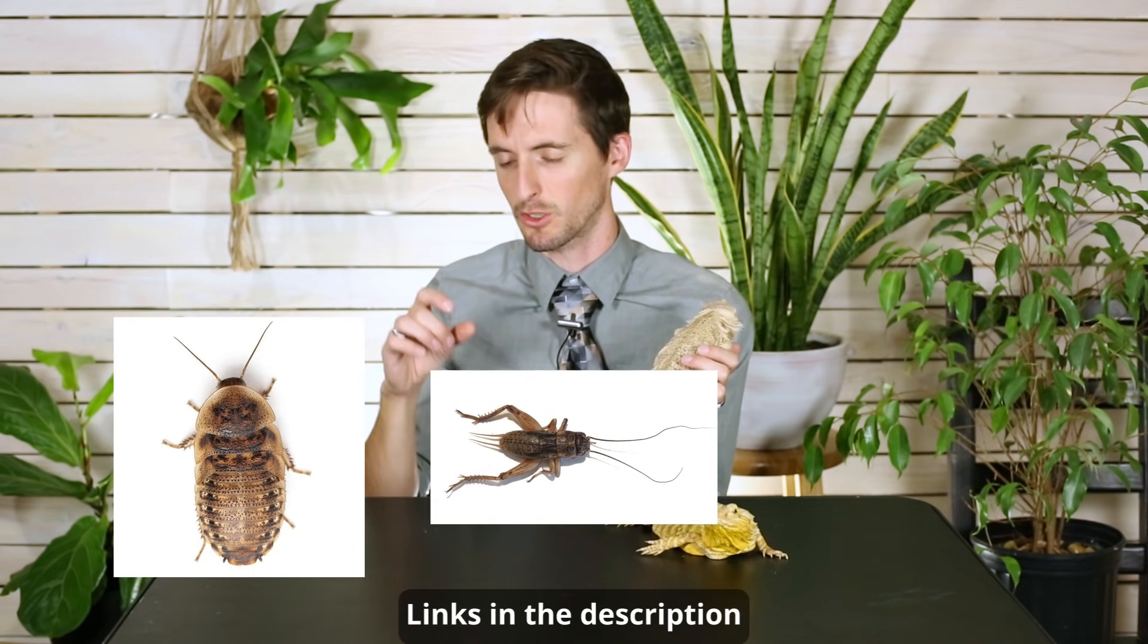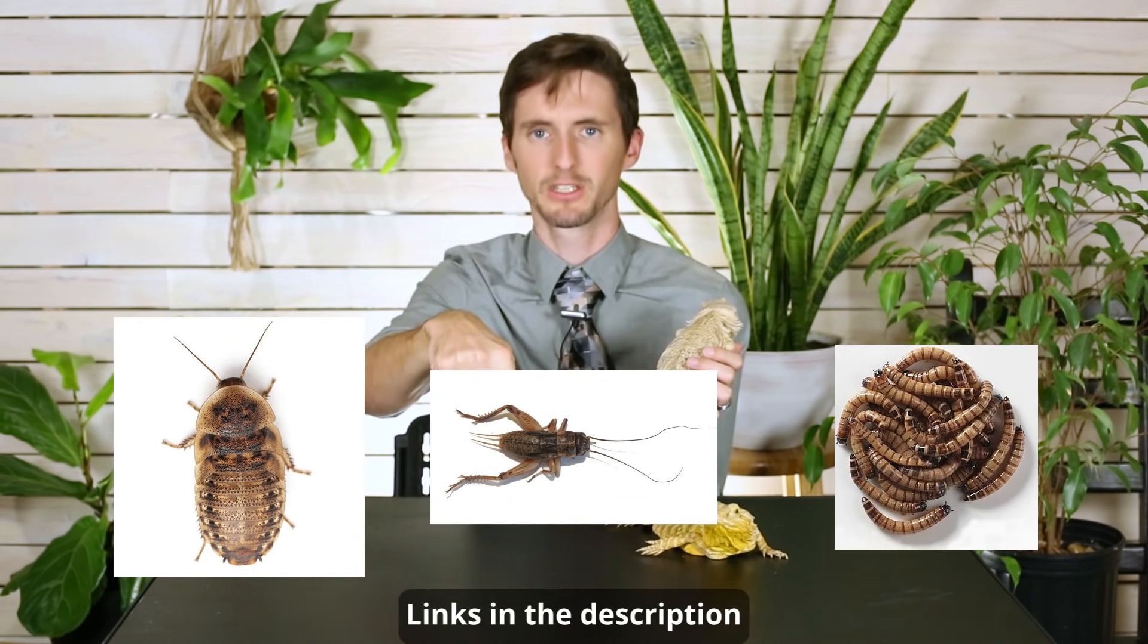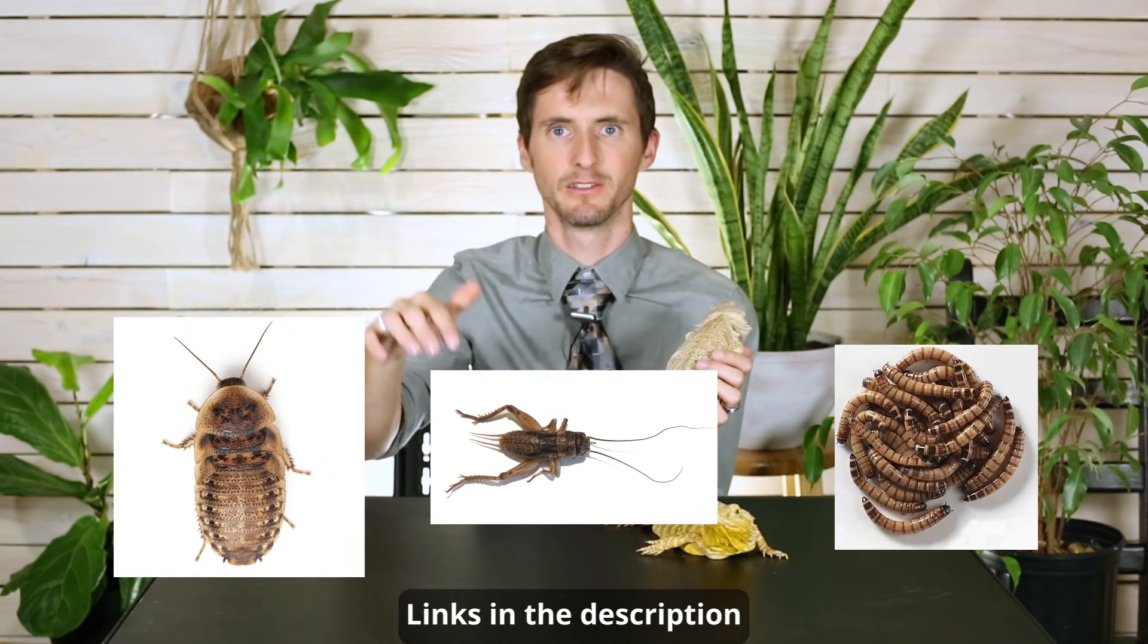So you're going to need various different kinds of insect feeders which could mean things like dubia roaches, crickets, superworms and we've actually got links to where you can get those things down in the comments. You can find them relatively affordably. I buy them in bulk online, I didn't have to start doing that until I started keeping bearded dragons because man they can go through the insects.